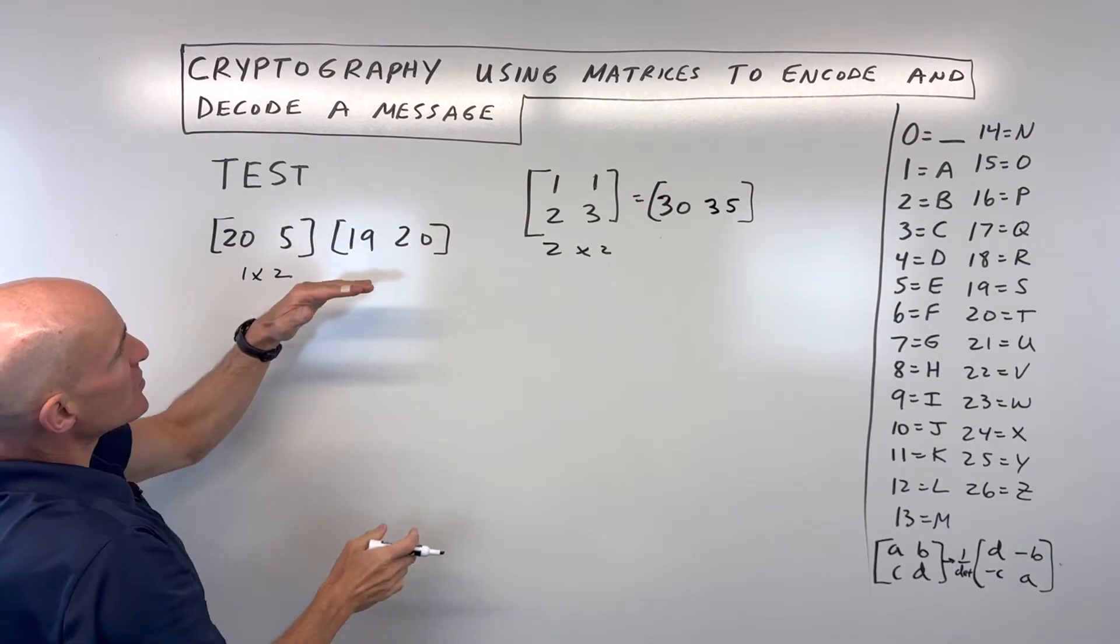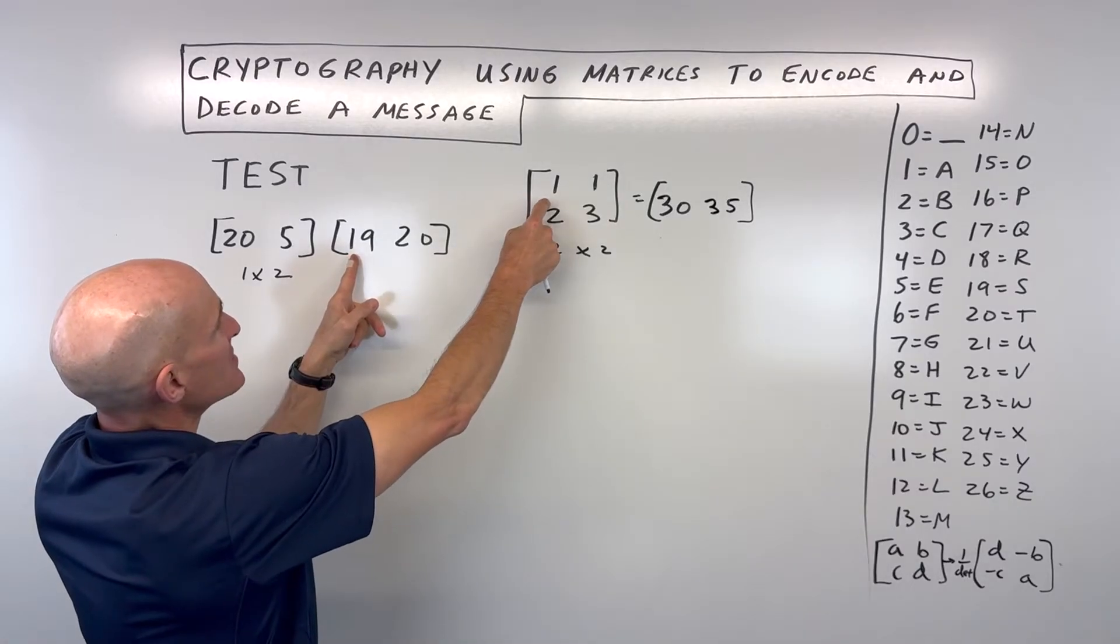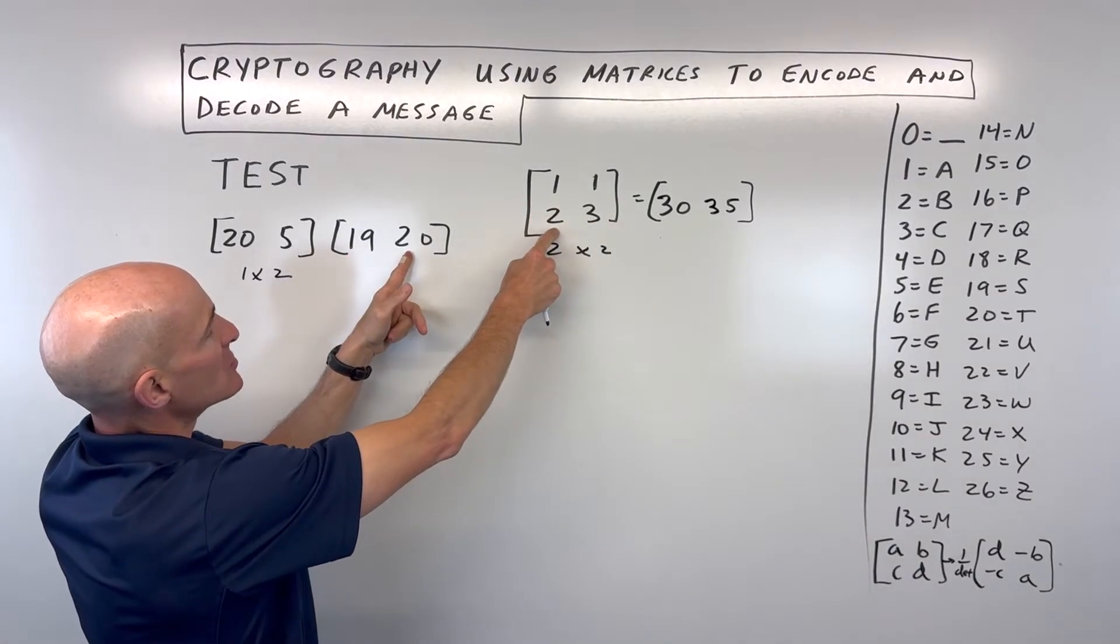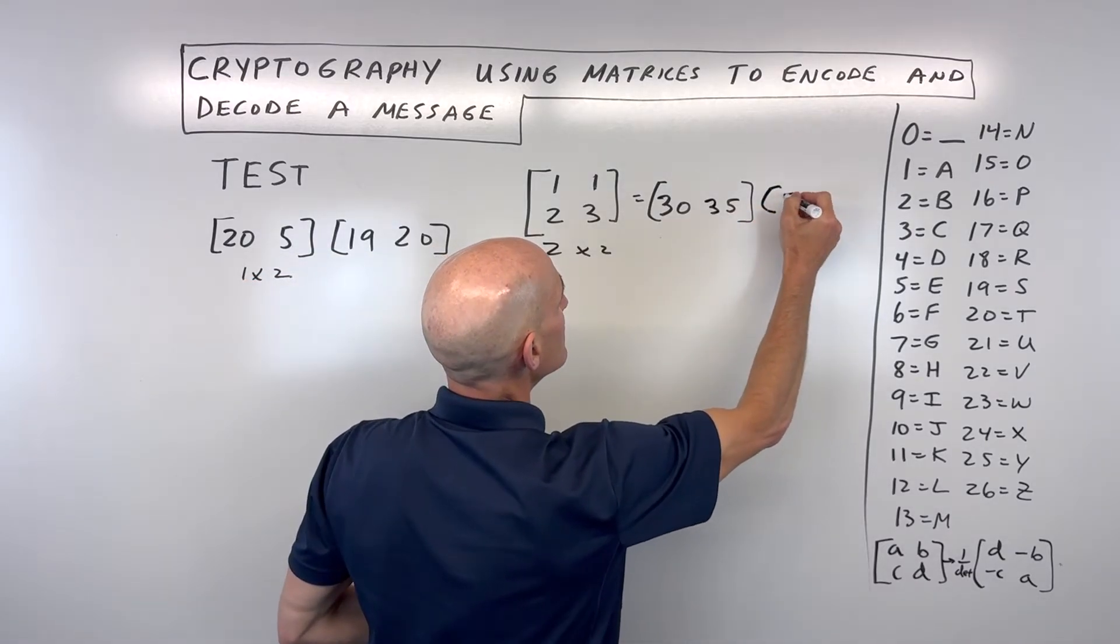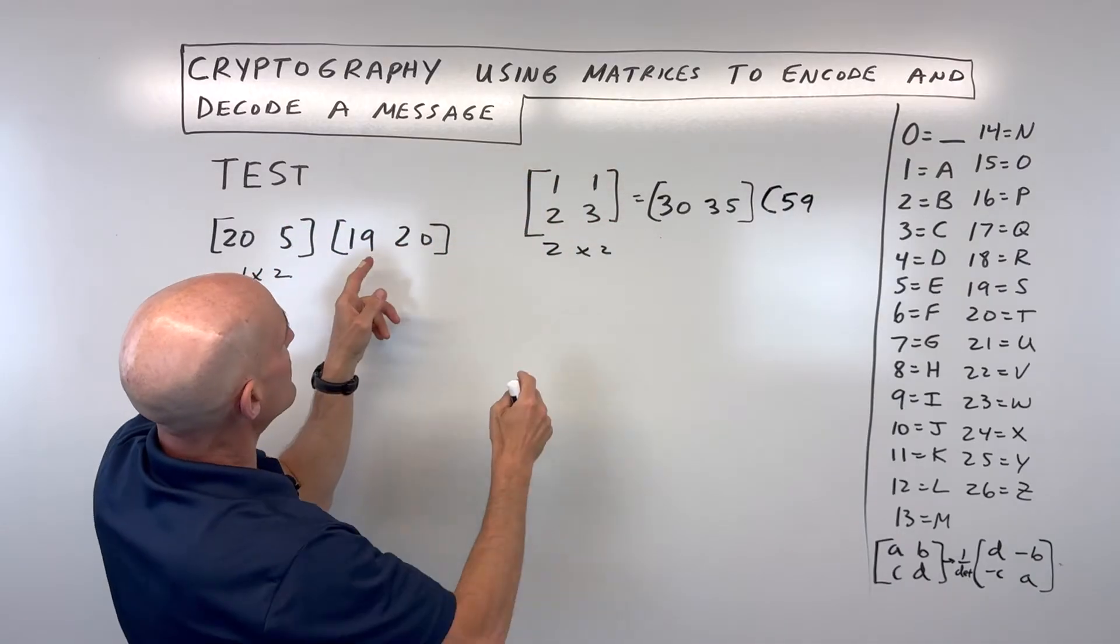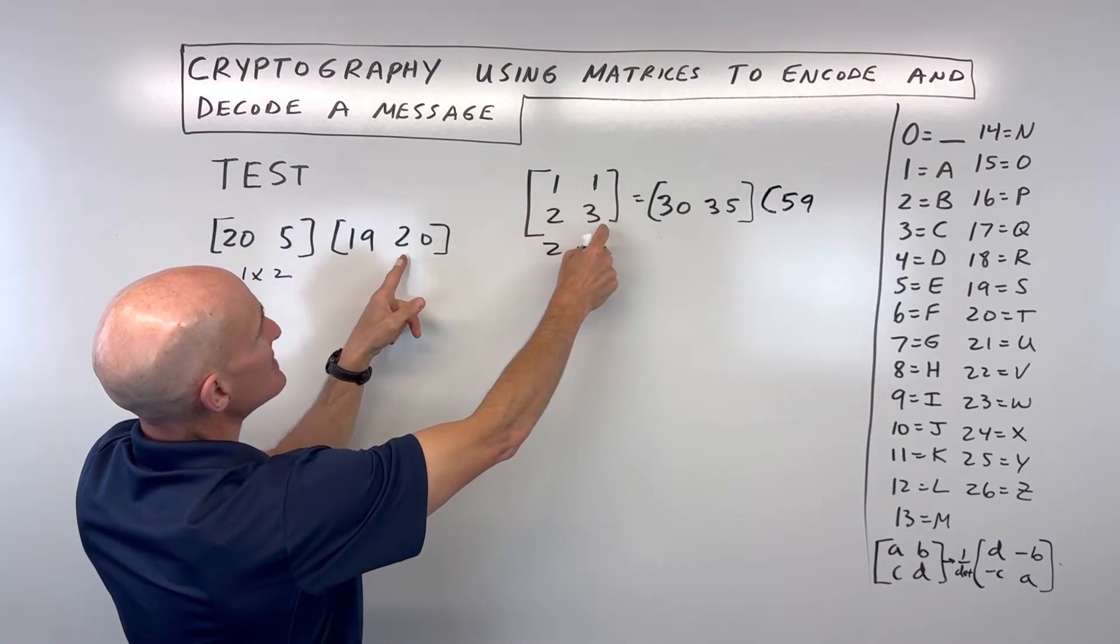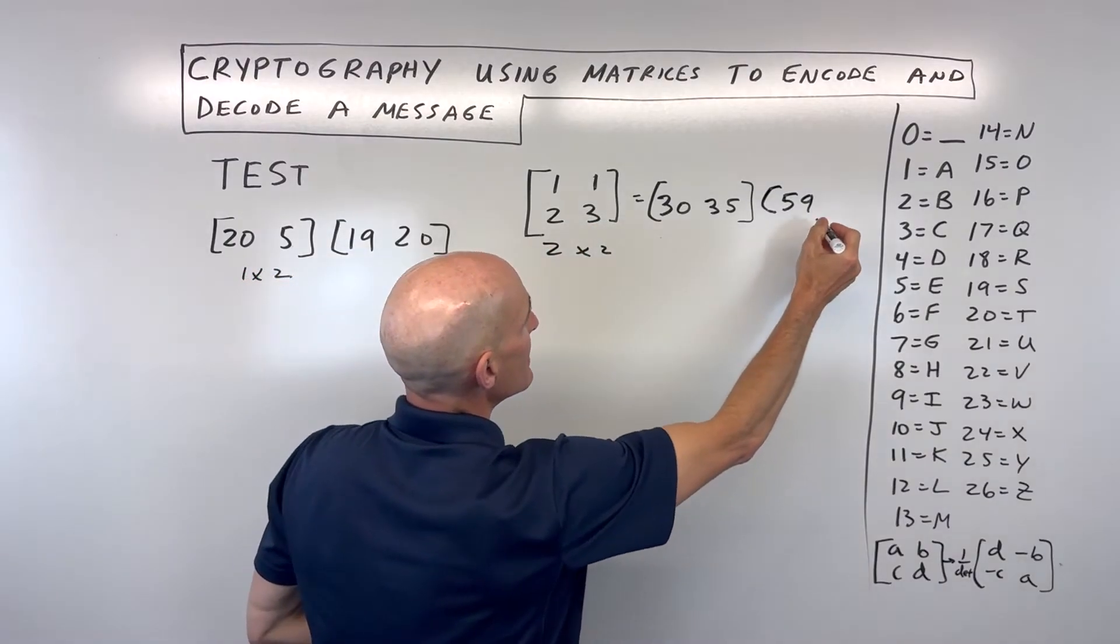And then let's go ahead and use this matrix. We're going to take row times column. We've got 19 times 1 is 19, 20 times 2 is 40, 40 plus 19 is 59. And then if we take this row times the second column, we have 19 times 1, which is 19, 20 times 3 is 60, 60 plus 19 is 79.